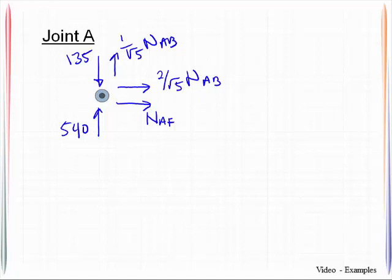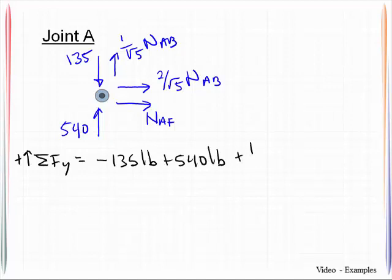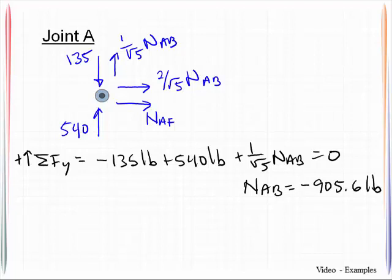So that'll be 2 over square root of 5 NAB and 1 over square root of 5 NAB. That accounts for all the forces at the joint and the unknown bar forces. So that's a complete free body diagram, and we are prepared to begin writing equilibrium equations. We'll sum forces in the y direction.